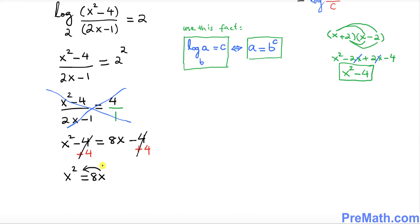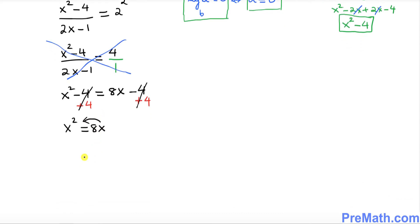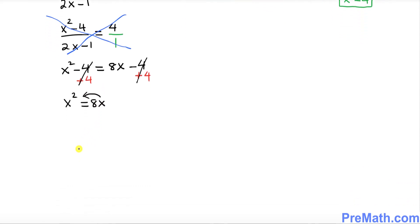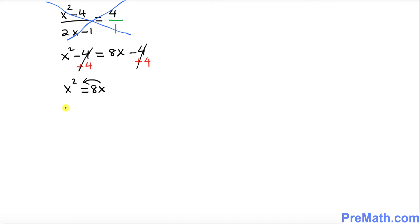I want you to move this 8X on the left hand side. So that's going to be pretty simple. It becomes X squared. When you move this 8X on the other side become negative 8X equal to 0.